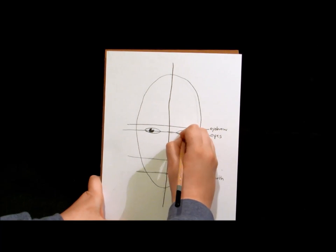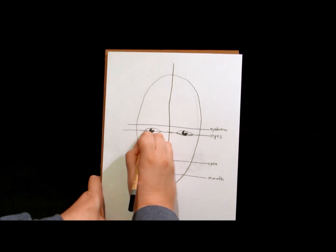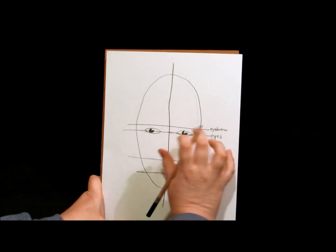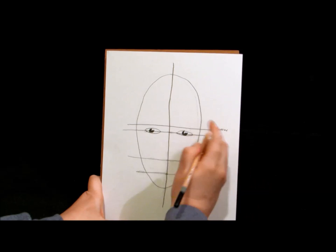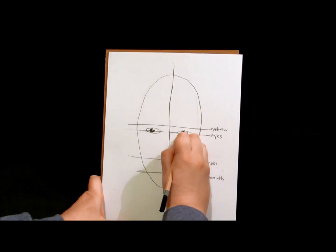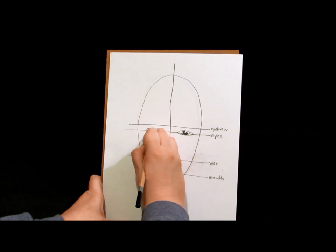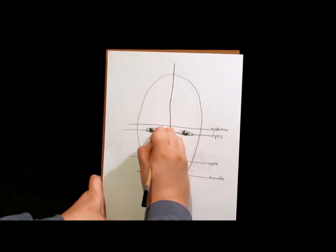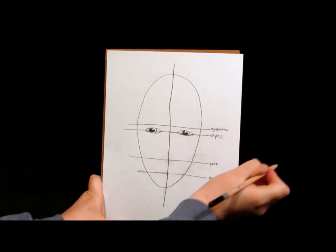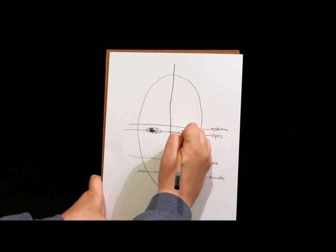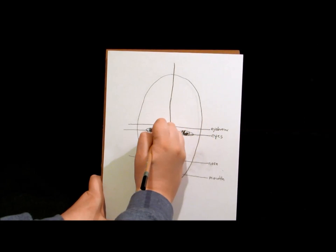We're not worried too much about proportion or shading or anything like that. We just want to get the proportions down. Or you can make kind of a little half circle around those pupils just to give you an idea of where the iris is or the colored part of the pupil.